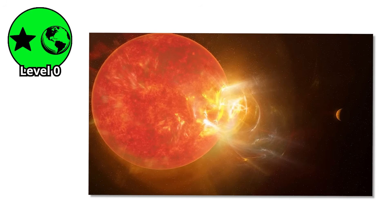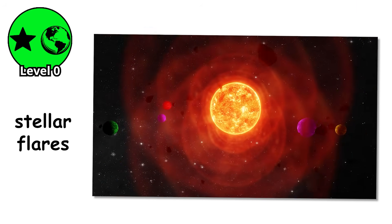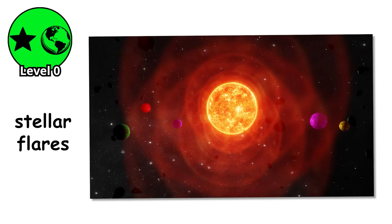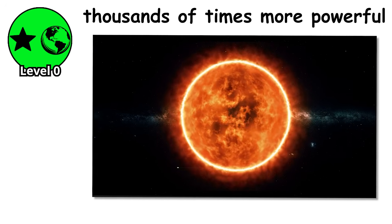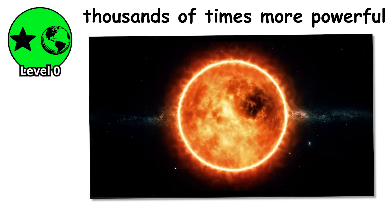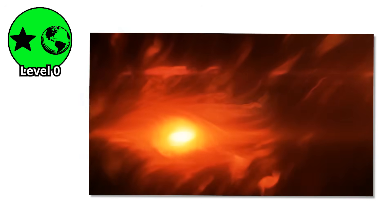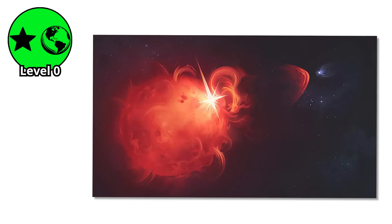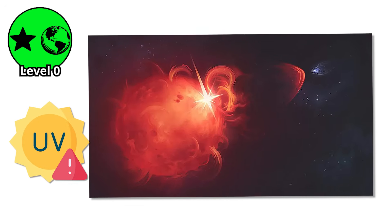Red dwarfs are violent, temperamental stars. They produce stellar flares, massive eruptions of radiation that can be thousands of times more powerful than anything our sun throws out. These flares happen constantly, unpredictably, bathing any nearby planets in lethal doses of x-rays and ultraviolet radiation.